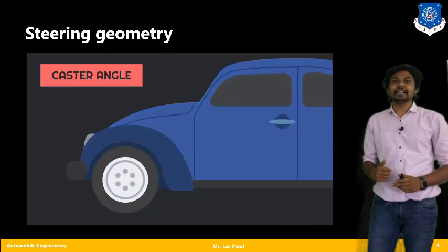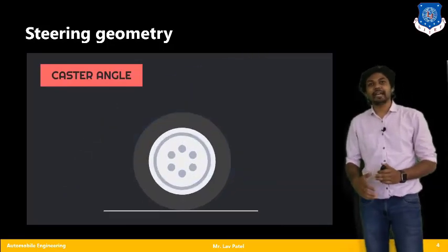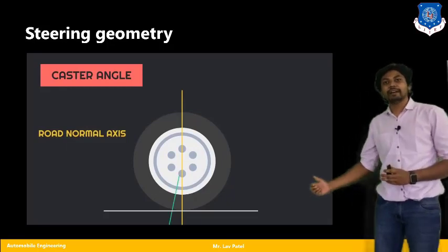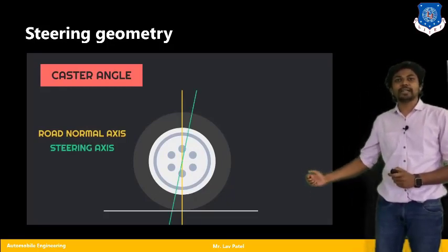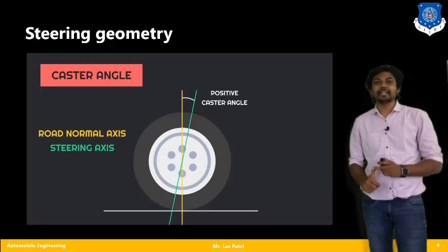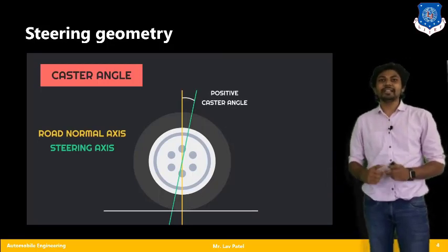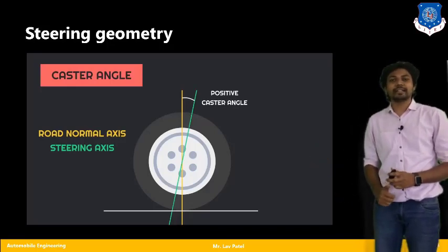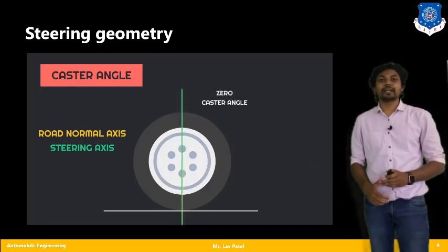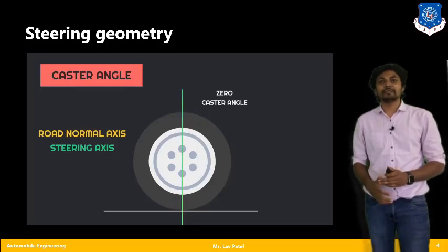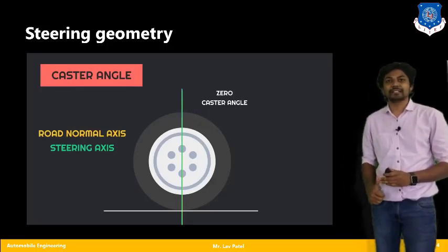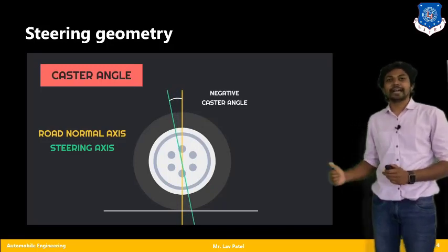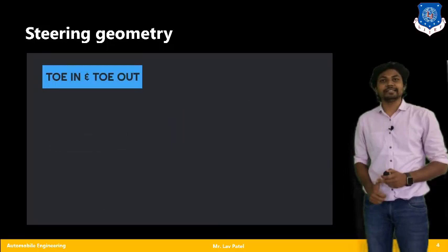The second parameter is the castor angle. For castor angle, we view the vehicle from the side. The road normal axis is shown in yellow and the steering axis is shown in green. The angle between the road normal axis and the steering axis is called the positive castor angle. Similarly, there are three types: positive castor, which is found in cars, motorcycles, and cycles; negative castor; and zero castor.